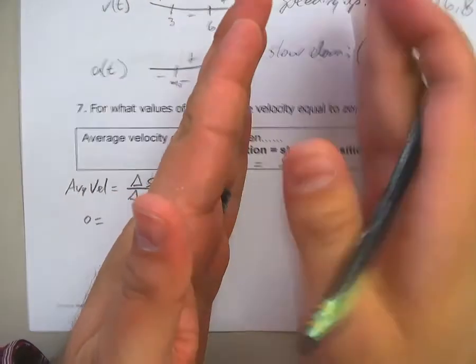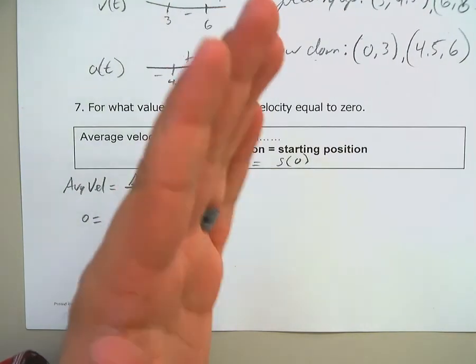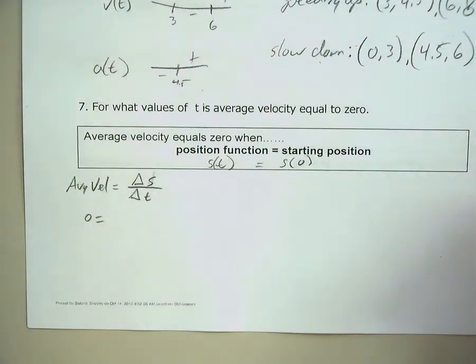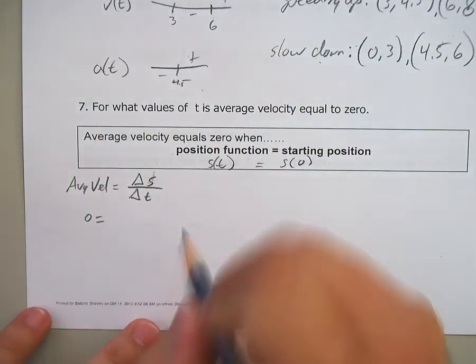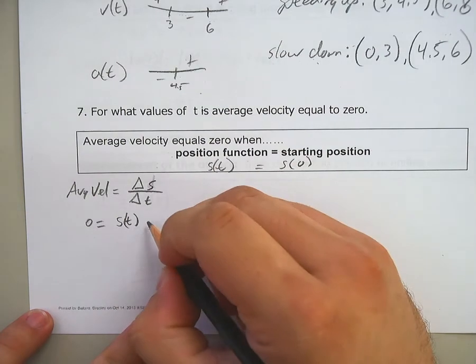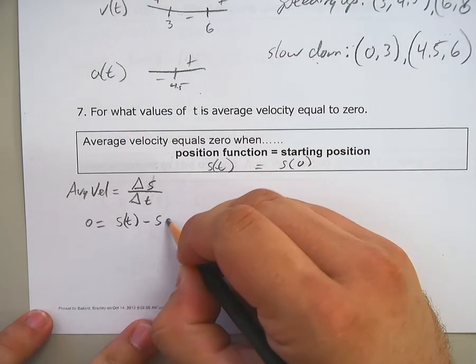And how do you find the change in s? It's going to go from where you stopped at to where you started at. Now you could stop at any point, right? It's the average velocity. So your position comes from s of t, and you are subtracting where you started, s of zero.